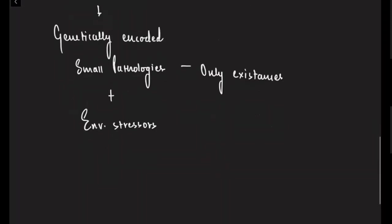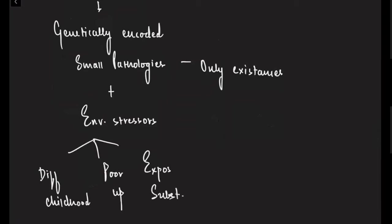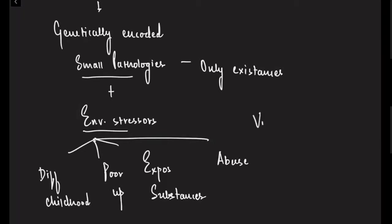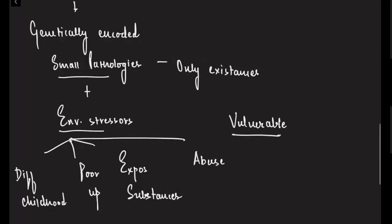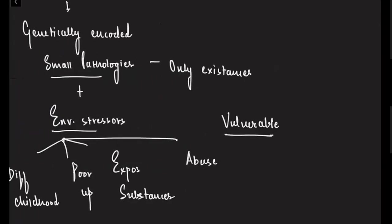It is when these pathologies are combined with environmental stressors — such as a difficult childhood, poor upbringing, exposure to substances, or abuse in any form — that the risk increases. These stressors, in an already genetically vulnerable population, explain why some people can tolerate certain stressors while others cannot.